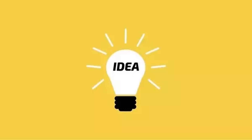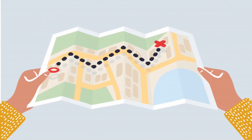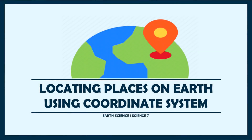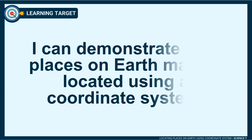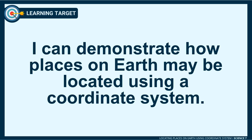However, if there comes a time that you have no one to ask, what will you rely on? A map would be a must-have. It is a handy tool to aid you in going to different places you haven't been to. Now the question is, how do you locate places on a map? In this video, you will learn about how to locate places on earth using a coordinate system.